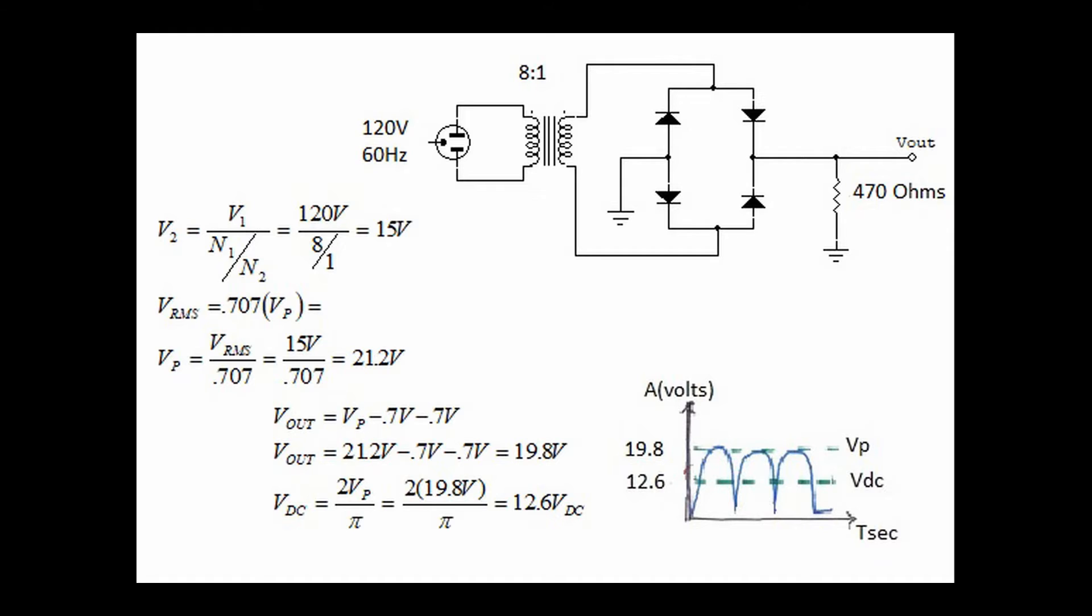Let's begin by using our transformer formula to find the voltage on the secondary. If we begin with the primary N1 20, and we go through the formula, we see that the secondary voltage is 15 volts. We continue by taking the formula for voltage RMS and rearranging it so as to find the peak voltage. In this case, 15 volts divided by 0.707 means that the peak voltage is 21.2 volts.